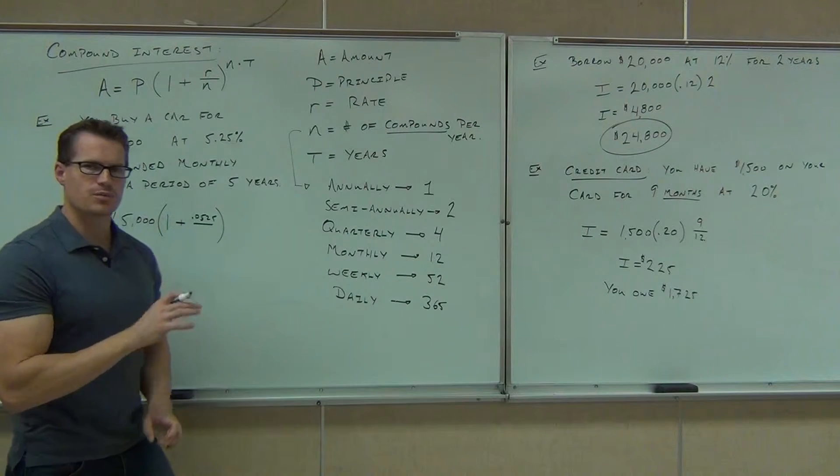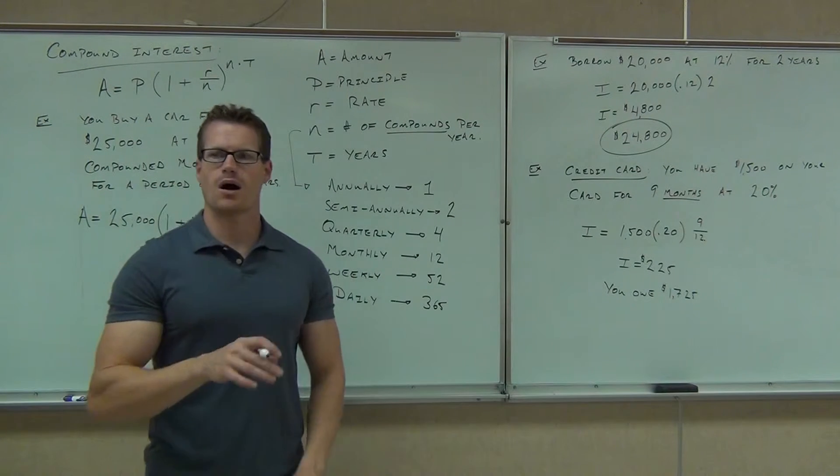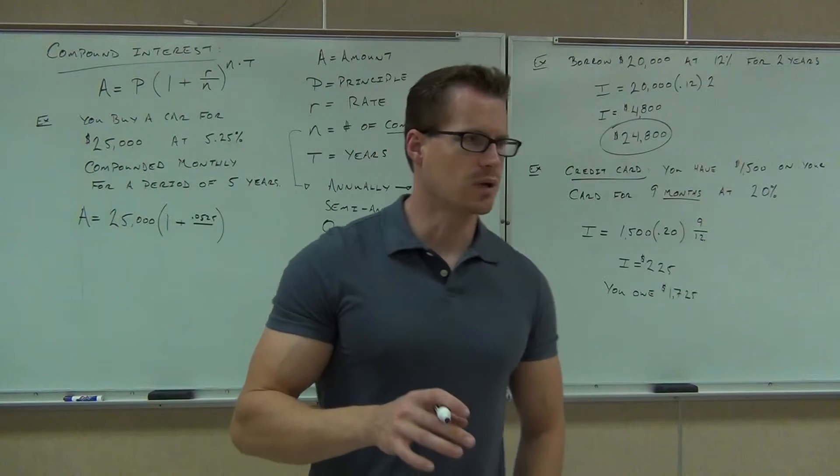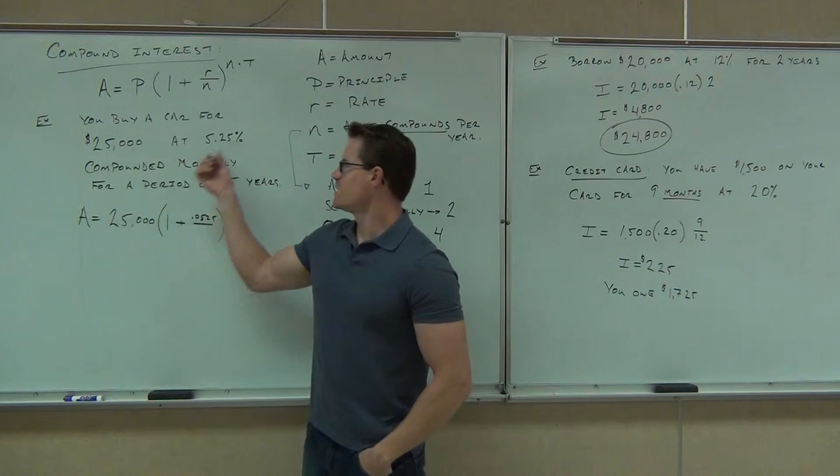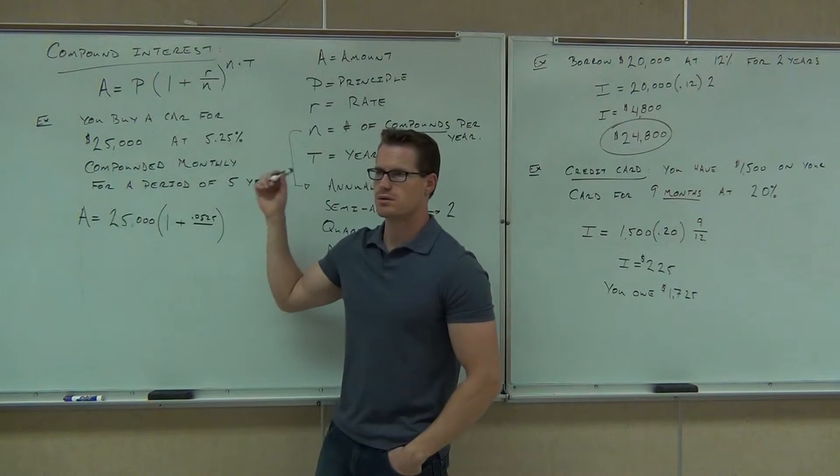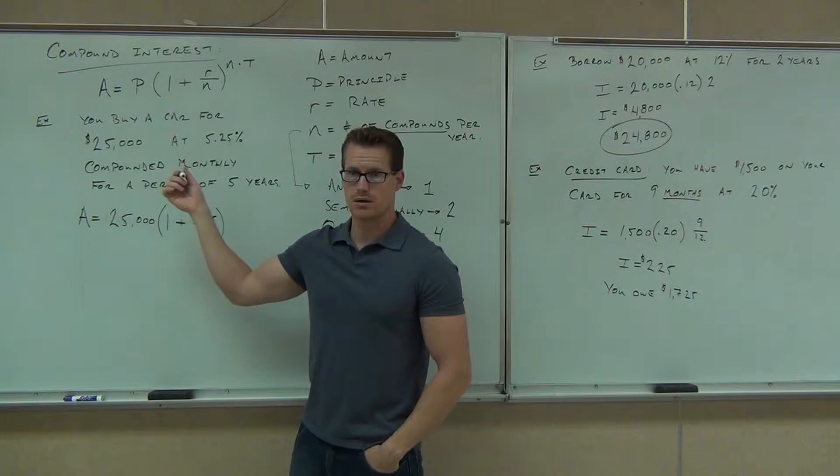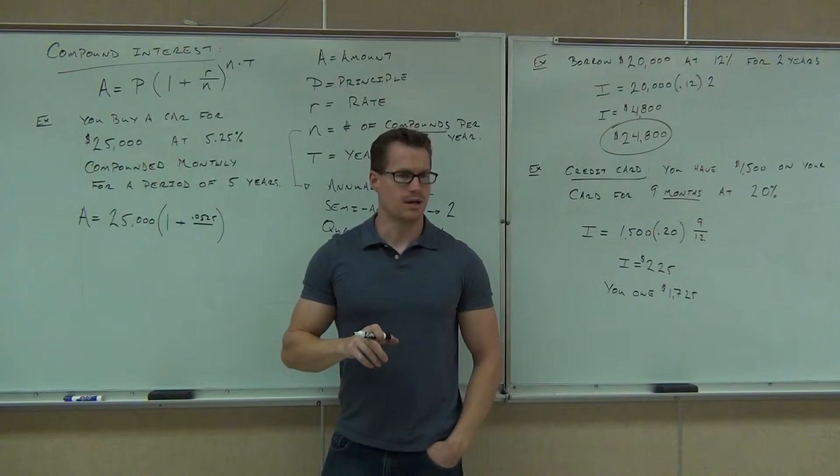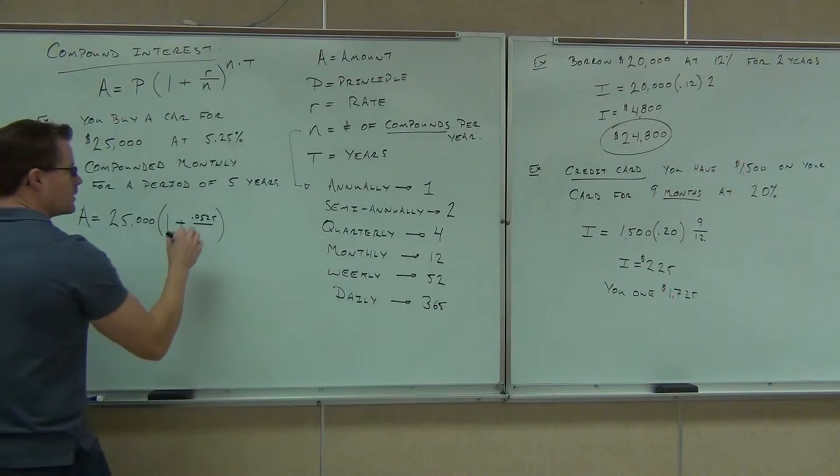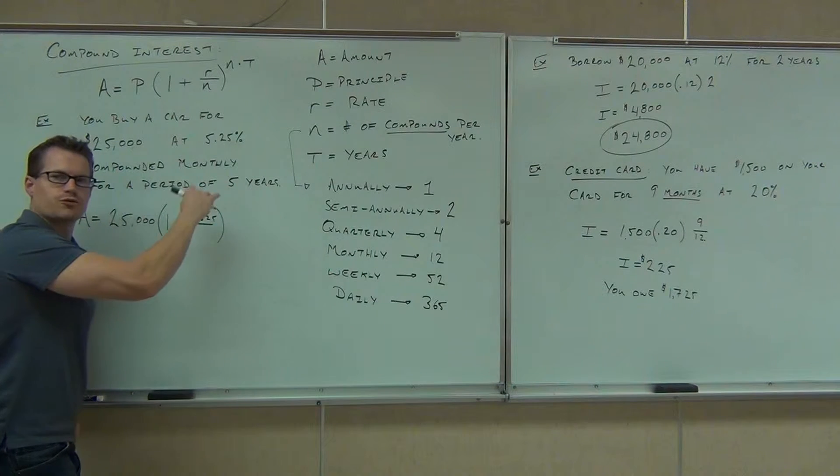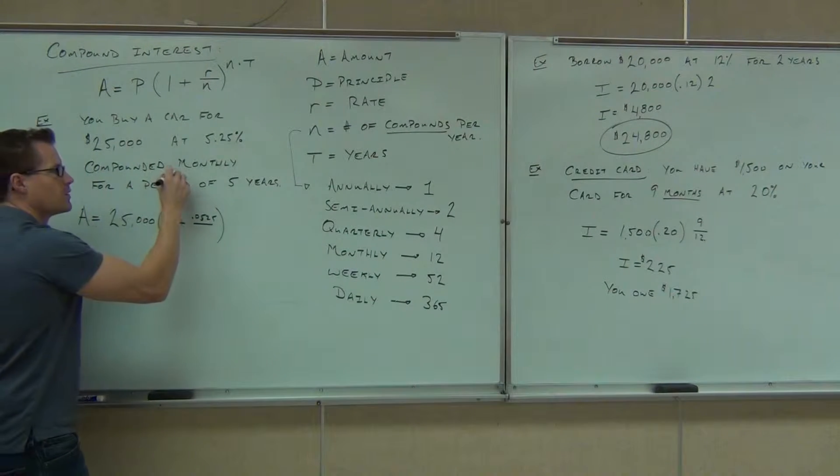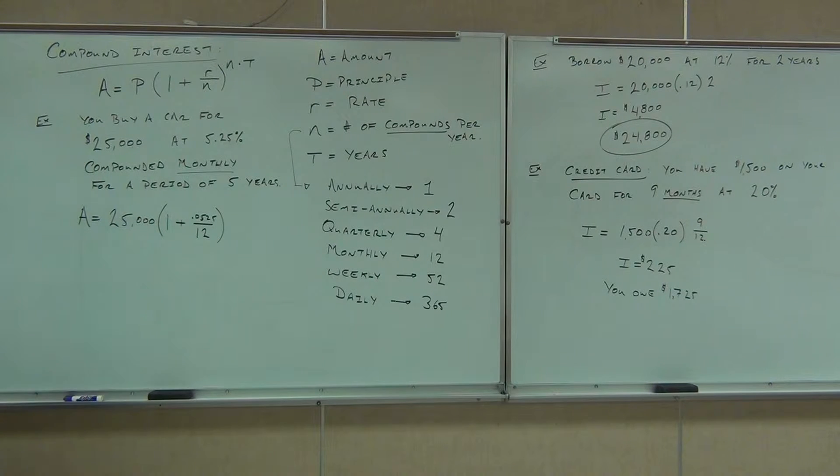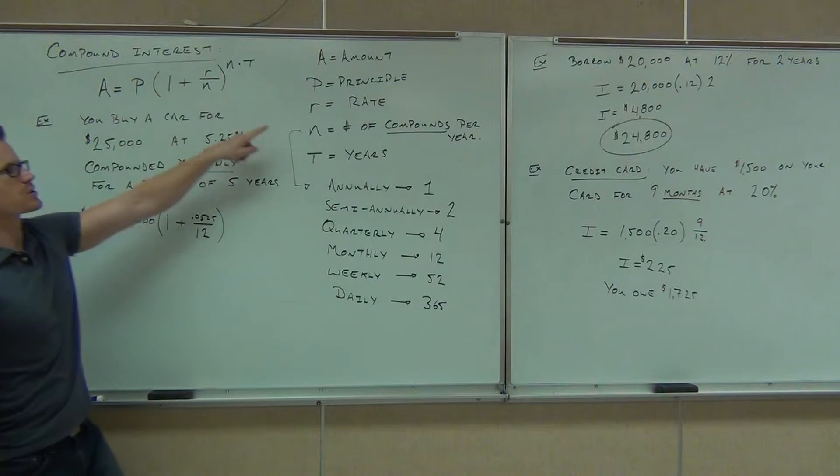Now the other important one is the number of compounds. If you read through the problem carefully, it'll tell you in there somewhere how much compounds you have. What's the key word here for compounds? Monthly. What's your N? 12. Your N is 12. You don't have to do any calculation. It'll do it for you. You just got to figure out monthly, 12.